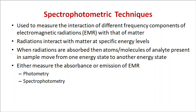Before starting spectrophotometric techniques, we should know what EMR — electromagnetic radiations — are. These EMR include radio waves, ultraviolet rays, infrared rays, cosmic rays, gamma rays, and visible rays. They all come under electromagnetic radiations and have a particular frequency and wavelength. Spectrophotometric techniques are basically used to measure the interaction of different frequency components of EMR with matter.